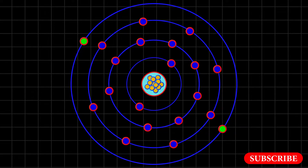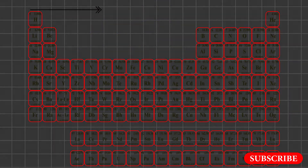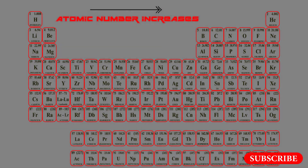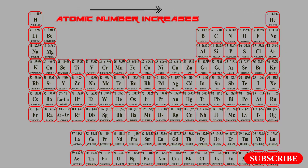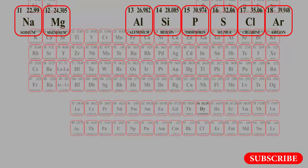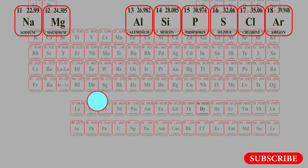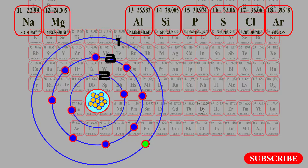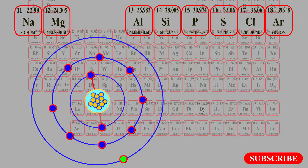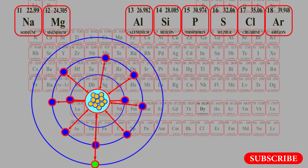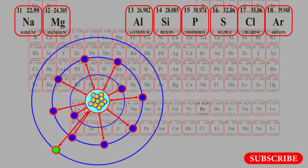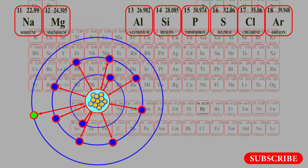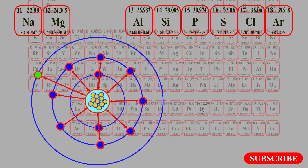The force of attraction between proton and electron will in turn decide the atomic radius. Now let us move towards the periodic table. If we move towards the right, the atomic number increases. Let us consider the third period. The first element is sodium, having atomic number 11, which means it has 11 protons inside the nucleus and 11 electrons outside. The arrangement of electrons is 2, 8, and 1.